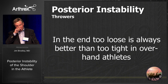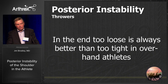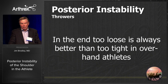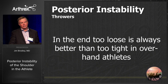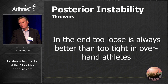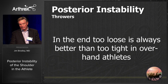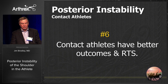In the end, too loose is always better than too tight in our overhand athletes, because if you restrict their external rotation and drive them superiorly, they can never return their velocity — you've taken a major leaguer and put them in the minor league. Throwers are the hardest ones to deal with.